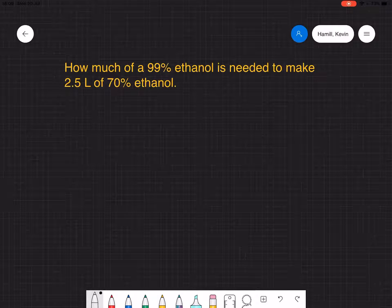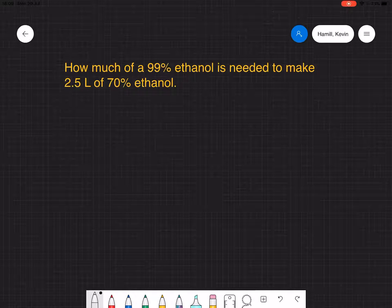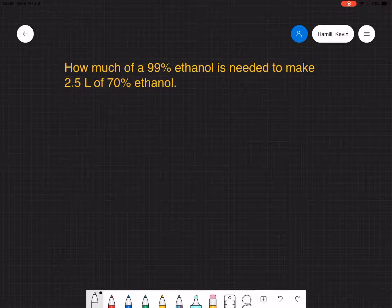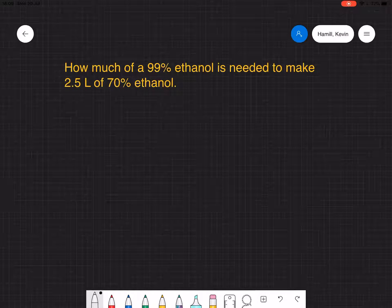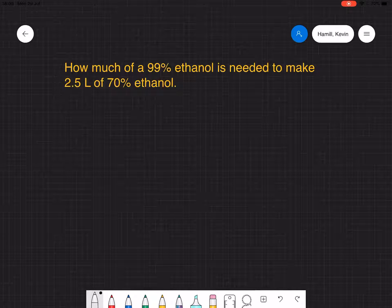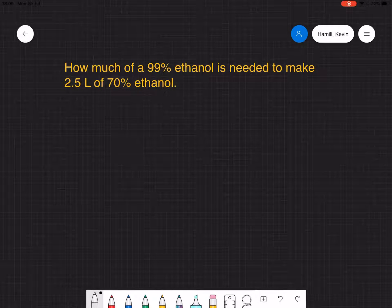This equation is a very standard sort of one you would do if you're doing tissue culture. It's diluting an almost pure stock solution down to the working concentration that you need it at. In this case I've chosen 99% ethanol down to 70% ethanol.